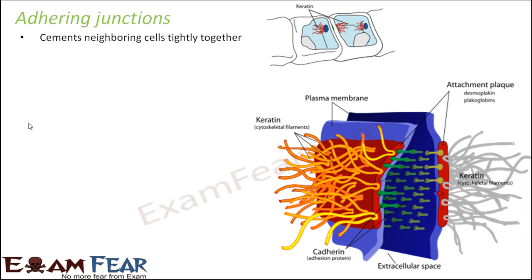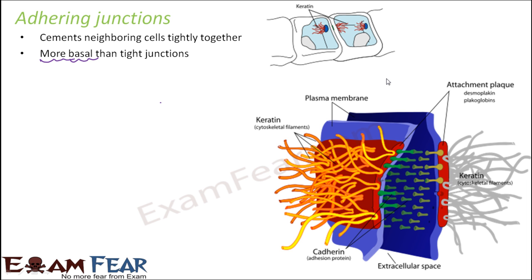Adhering junctions cement neighboring cells tightly together. These junctions are more basal compared to tight junctions — meaning they are located closer to the base rather than the apical surface. Adhering junctions are formed by proteins called cadherins and catenins. Cadherins are typically shown in red and catenins in yellow in diagrams.